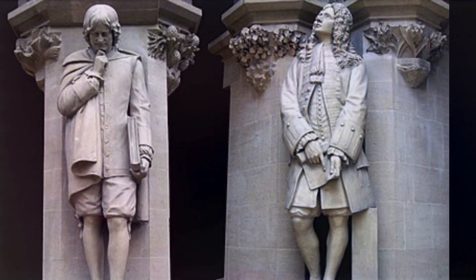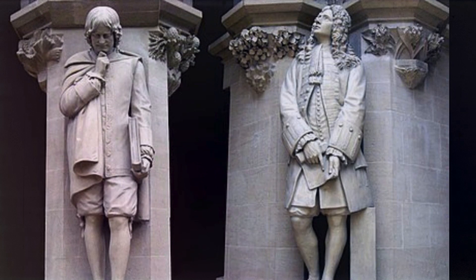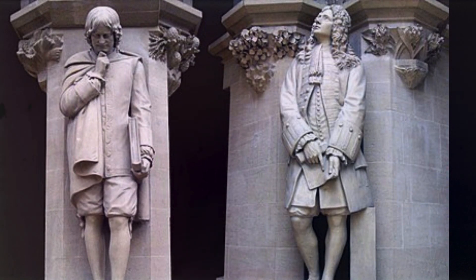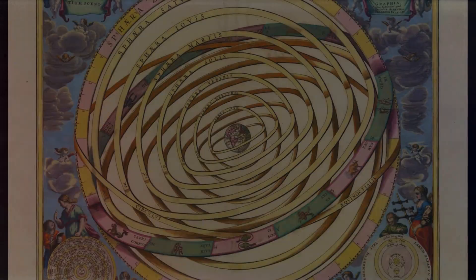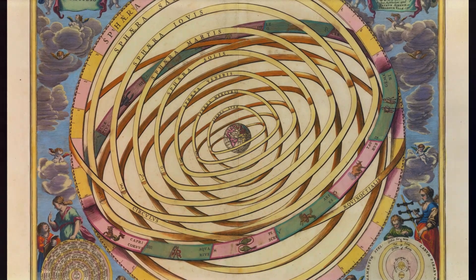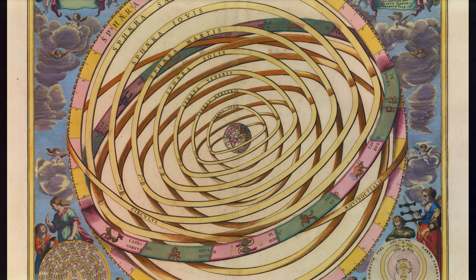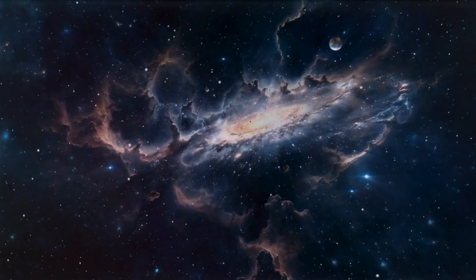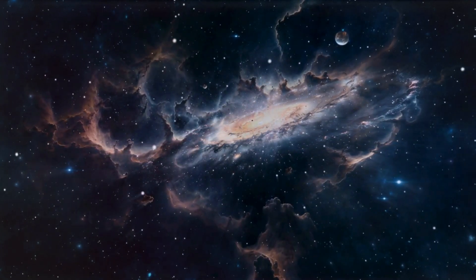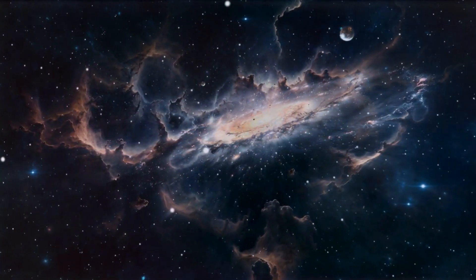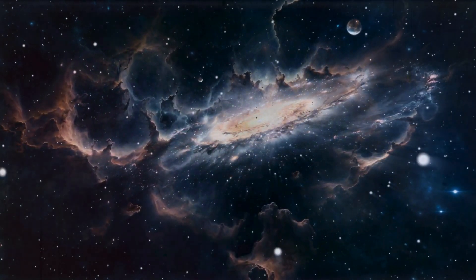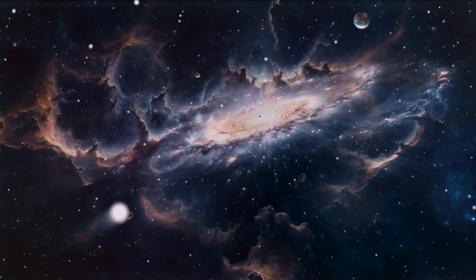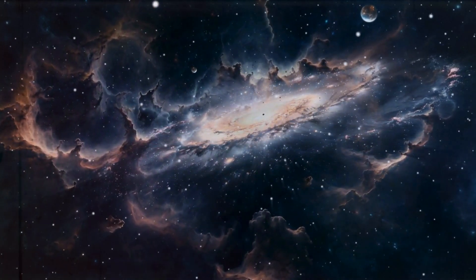Beyond their mathematical dispute, the two thinkers also held starkly different philosophical perspectives. Newton's universe was largely mechanistic, governed by physical laws set in motion by a divine creator but unfolding deterministically. Leibniz, by contrast, envisioned a world of monads, where each fundamental entity operated according to its own internal principle, bound together by pre-established harmony. Their clashing views reflected not just two competing approaches to science and philosophy, but two fundamentally different ways of understanding reality itself. One rooted in empirical observation and forces, the other in metaphysical principles and rational order. While their personal feud cast a shadow over their correspondence, history has recognised both as towering intellectual figures, each shaping the modern world in ways that neither could have fully foreseen.